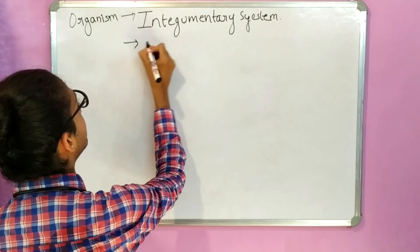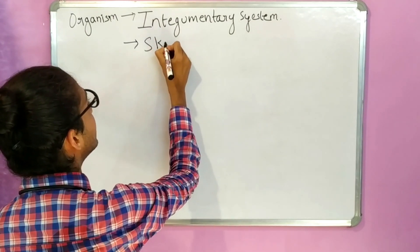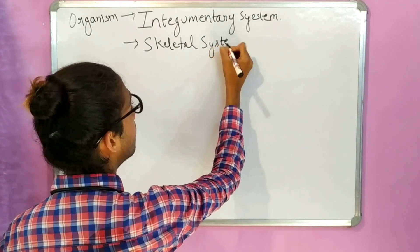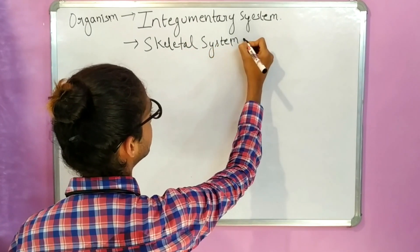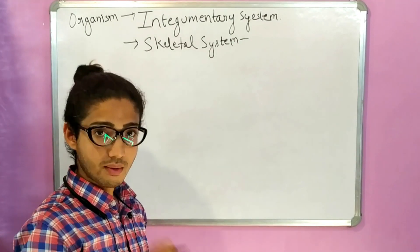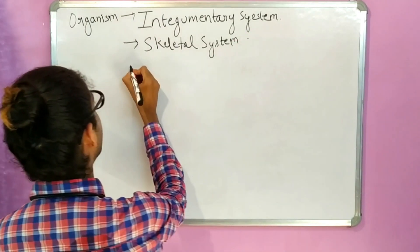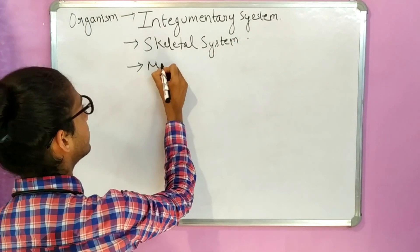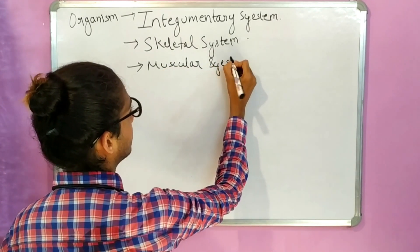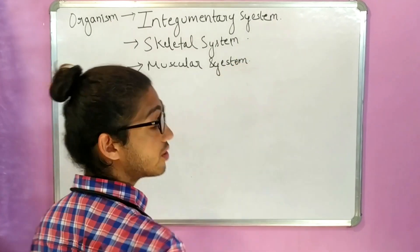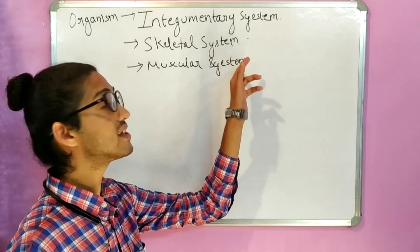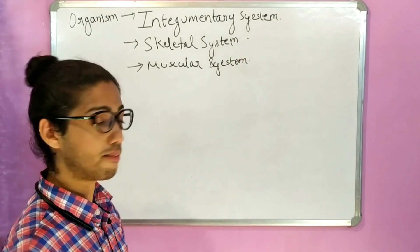The second is the skeletal system, which comprises your bones and cartilages. The main function of this system is to support the entire body. Third is the muscular system, which talks about the musculature of the entire body and, with the help of the skeletal system, helps in the movement of the body.